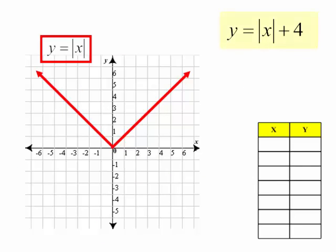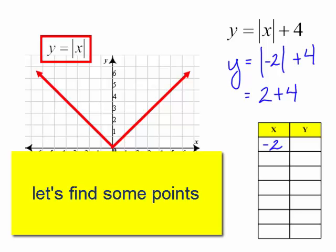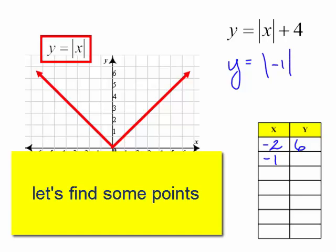Let's graph y equals the absolute value of x plus 4. I can pick any numbers for x. Let's try negative 2. y will equal the absolute value of negative 2 plus 4. That would be 2 plus 4, which is 6. Let's try negative 1. y equals the absolute value of negative 1 plus 4. That will equal 1 plus 4, which is 5.